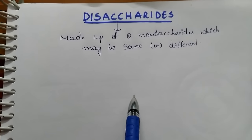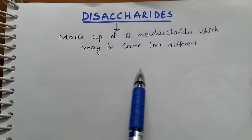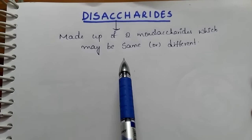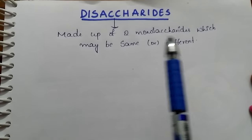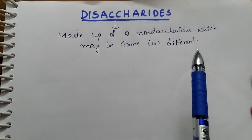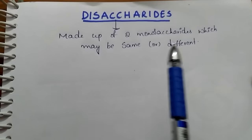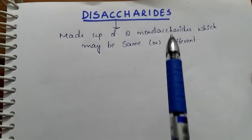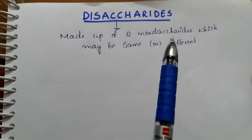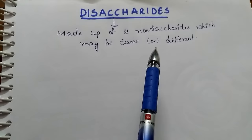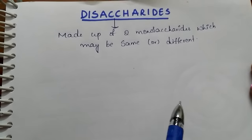In today's class I am going to discuss about disaccharides. Disaccharides are oligosaccharides made up of two monosaccharide units which may be same or different. These two monosaccharide units are linked with each other by glycosidic linkage. This glycosidic linkage is formed by the release of a water molecule. Let us discuss a few disaccharides like sucrose, maltose, and lactose.